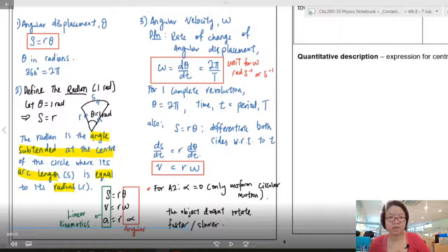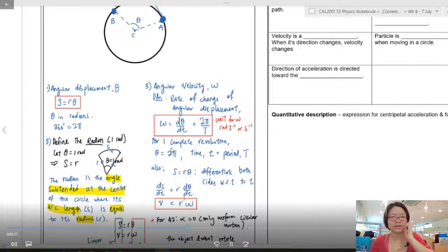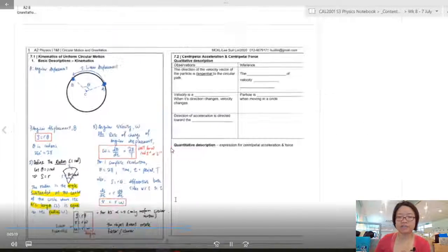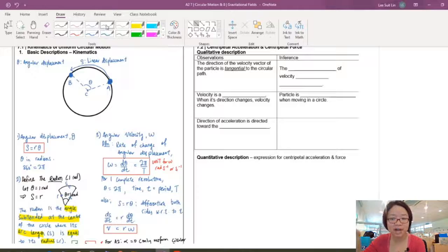So you have s is equal to r theta, and then you have v is equal to r omega, so they can be interchangeable. Linear can change to rotational, and rotational can change back to linear, provided you already have a value for the radius. Okay, so let us continue.